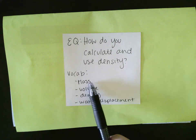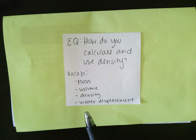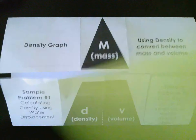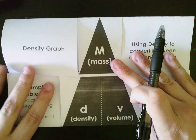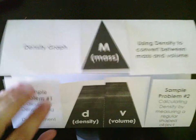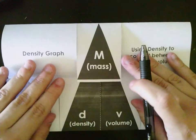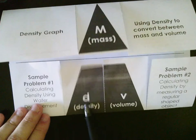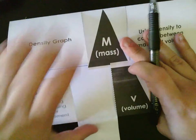Our vocab for this lesson is mass, volume, density, and we're going to start learning about water displacement. You should have already made your foldable. Unlike some of our other foldables, these aren't just going to go in order, so make sure you're following along as to which tab I am writing under. We're actually going to start by writing under the density tab, since that's what this lesson is all about.